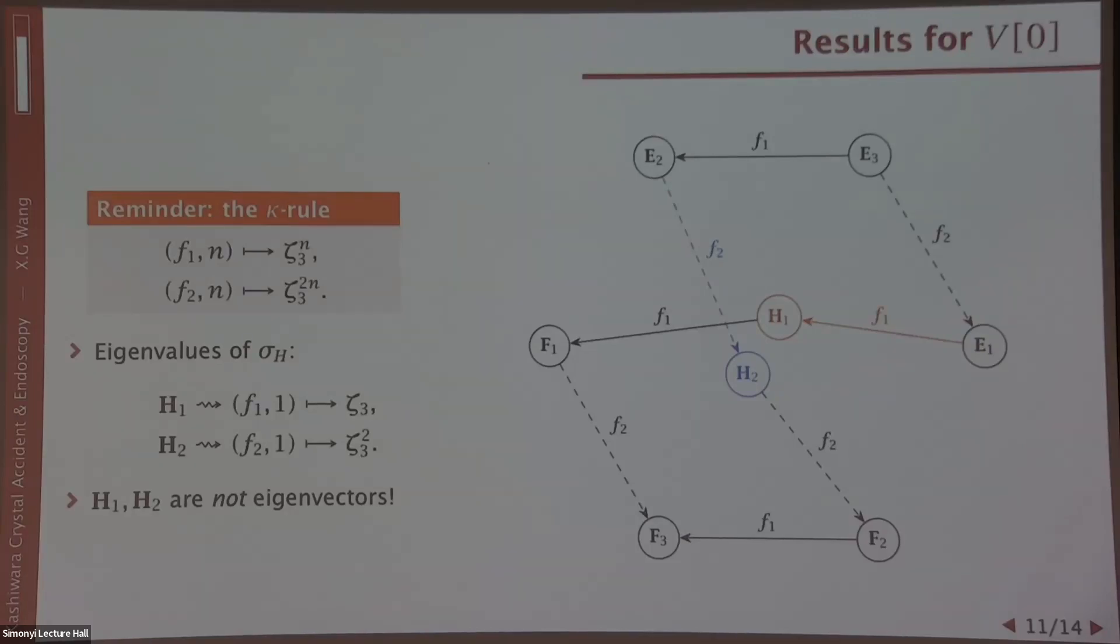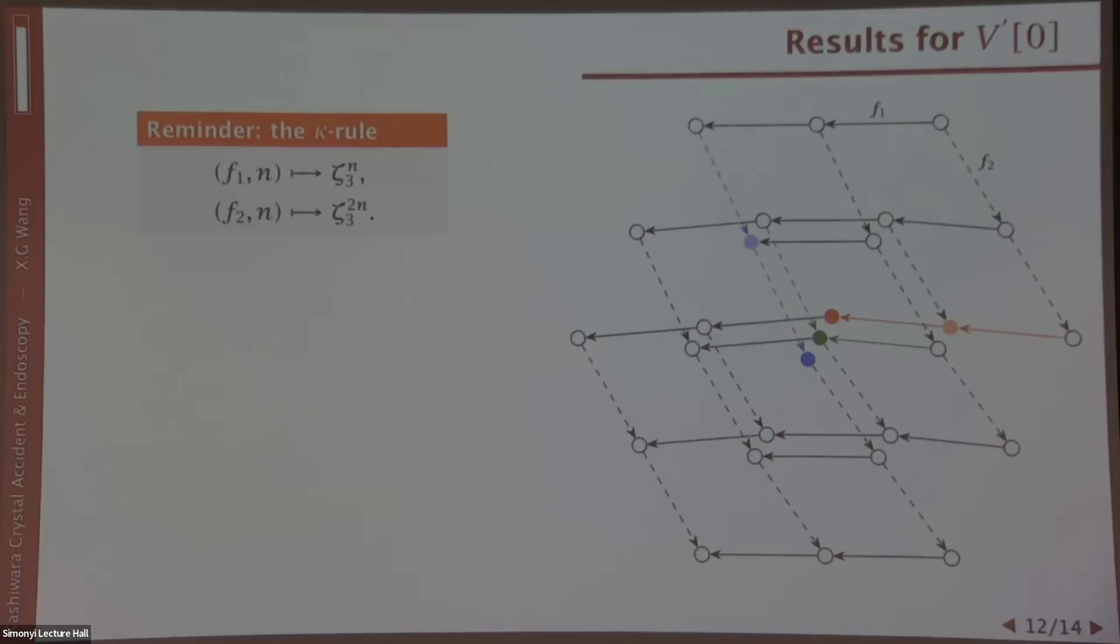Be cautious that H1 and H2 are not eigenvectors. The second example is slightly more complicated. Look at V prime zero. Now it's a three-dimensional space, and eigenvalues are 1, zeta 3, and zeta 3 squared. The procedure looks like this. If we look at the orange dot, it has a single F1 arrow pointing to it, but you can go further up. You see there is a chain of length 2 F1 arrow pointing to it. So instead of (F1, 1), we get (F1, 2). According to the rule, you get zeta 3 squared.